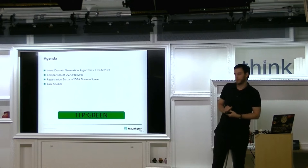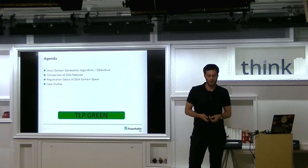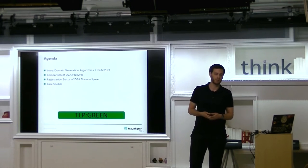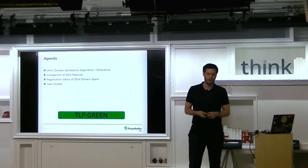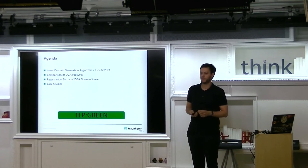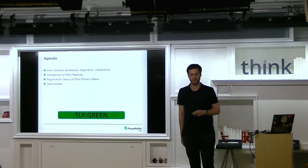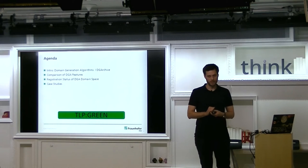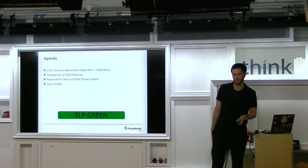The agenda: first a quick introduction on DGAs — what is it, where does it come from, how is it used, what purpose does it serve? Then my project DGArchive and what you can do with it. Then I'll compare features across the DGAs tracked there. I was very lucky to get registration info for about 80 million domains from DomainTools, who collaborated with me. The whole talk is TLP Green, but there will be one short TLP Amber section afterward — only two slides, please don't tweet about that.